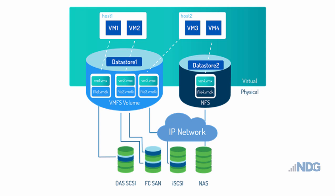Let's talk about block level storage versus file level storage. In this diagram, we have two VMware ESXi servers: Host1 with two virtual machines and Host2 with two virtual machines. They're accessing different types of data stores using different technologies.